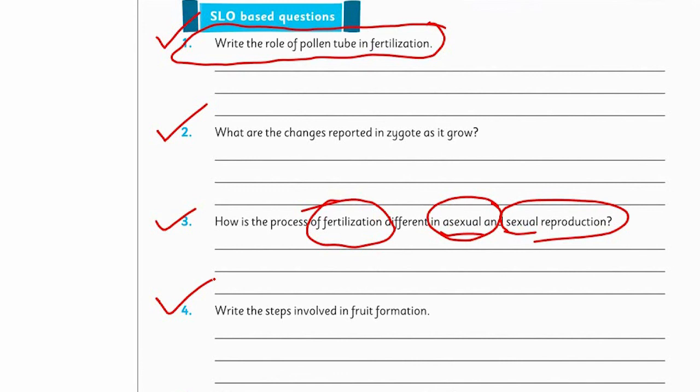After fertilization, the embryo develops and we discuss fruit formation accordingly. With this, we have completed Chapter 3. Next, we will study the environment and ecology. Thank you very much.